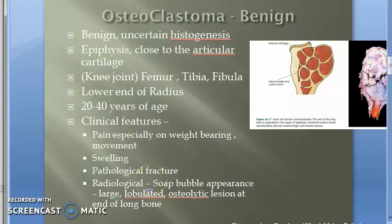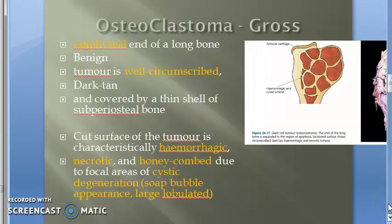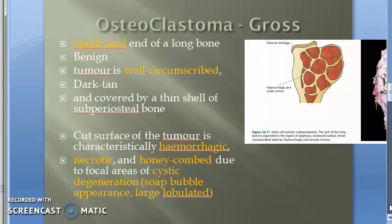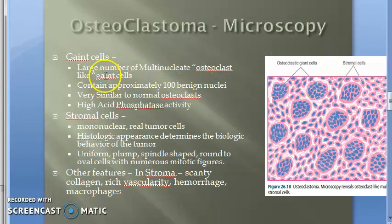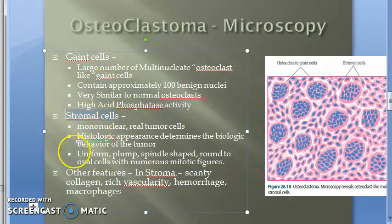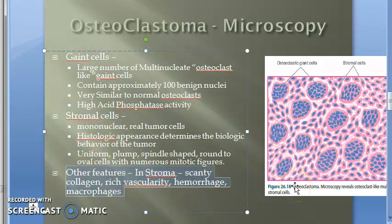In the last video we looked at osteoclastoma — the clinical features, the gross morphology: honeycombed cystic degeneration, soap bubble appearance in the epiphysis, hemorrhagic necrotic, benign. In the microscopy we saw the giant cells, which are osteoclast-like stromal cells and are actually the tumor cells. There will be scanty collagen in the stroma, rich vascularity, hemorrhage, macrophages, etc.